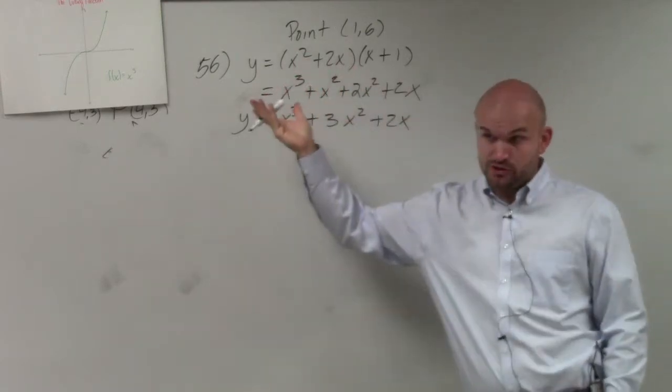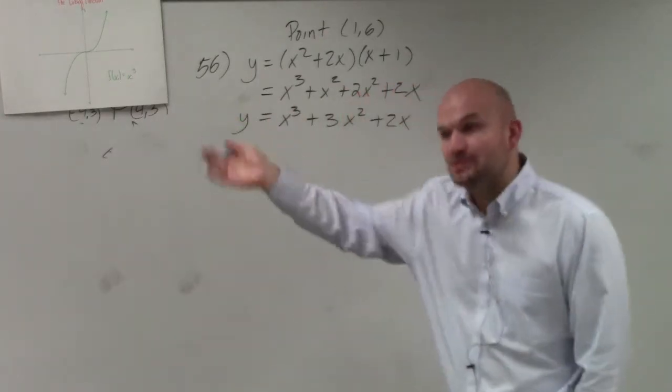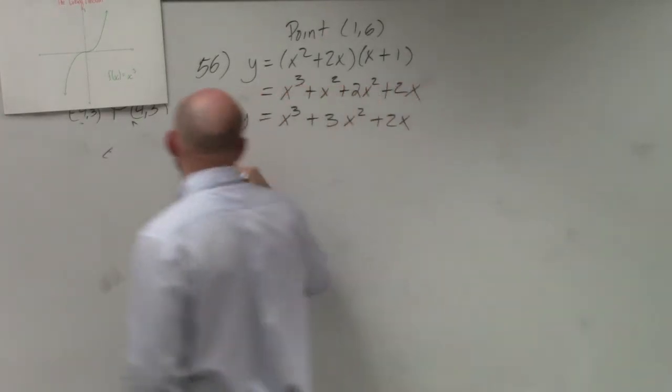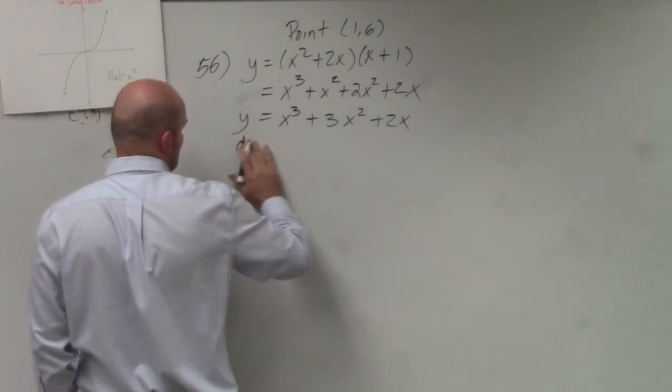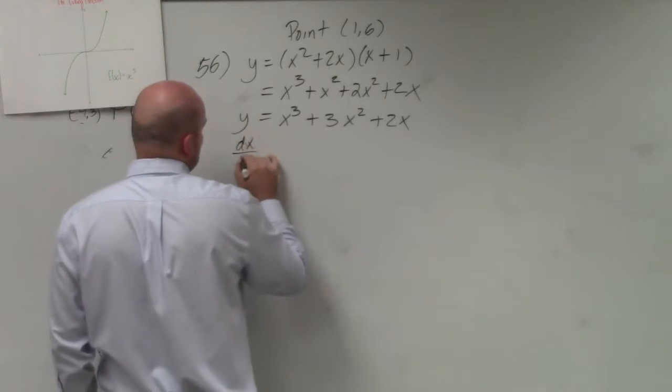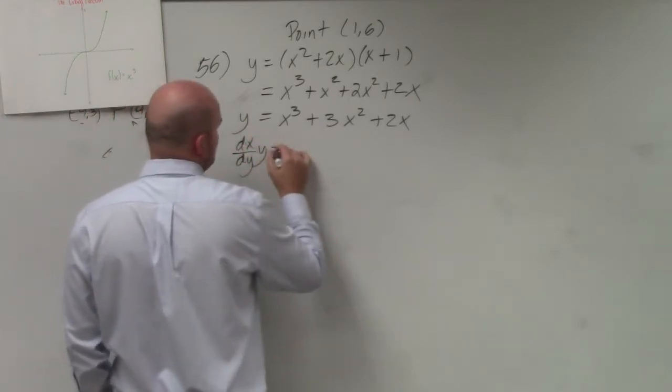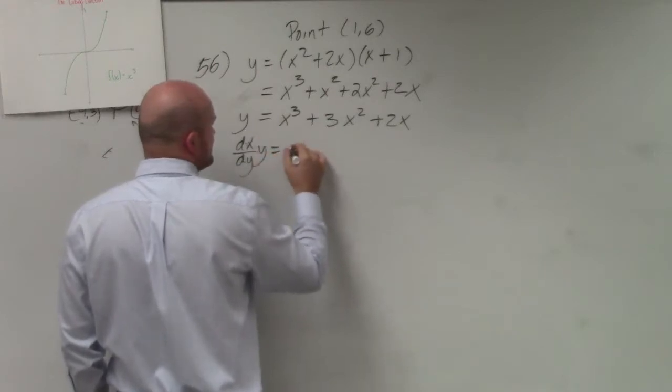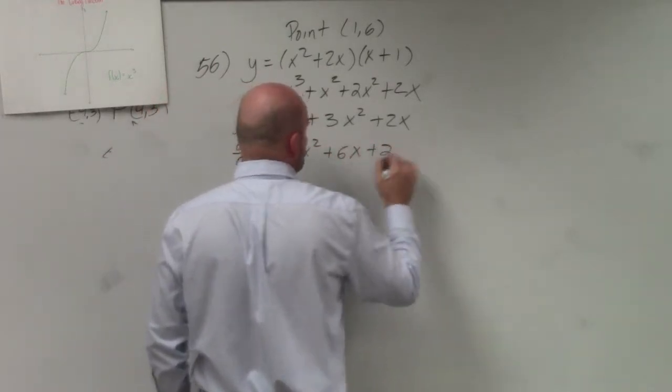So I've simplified it, which I told you to do in that last quiz. Simplified it, divide by a variable, multiply, whatever you need to do. And therefore, now we can simply take the derivative. And so therefore, I'd have 3x² + 6x + 2.